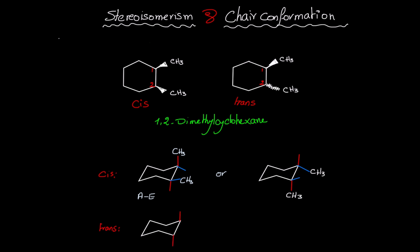For the trans stereoisomer, similarly drawing the axial and equatorial bonds: if I place the CH₃ on an axial on the first carbon, it has to be on an axial on the second carbon as well, because the axial bonds are facing opposite sides.